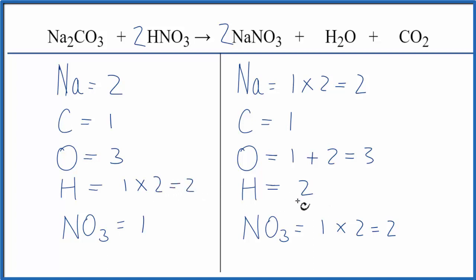so those are two hydrogens. Those are balanced. One nitrate times the two gives me two nitrates. Those are balanced, and we're done. This equation is balanced.